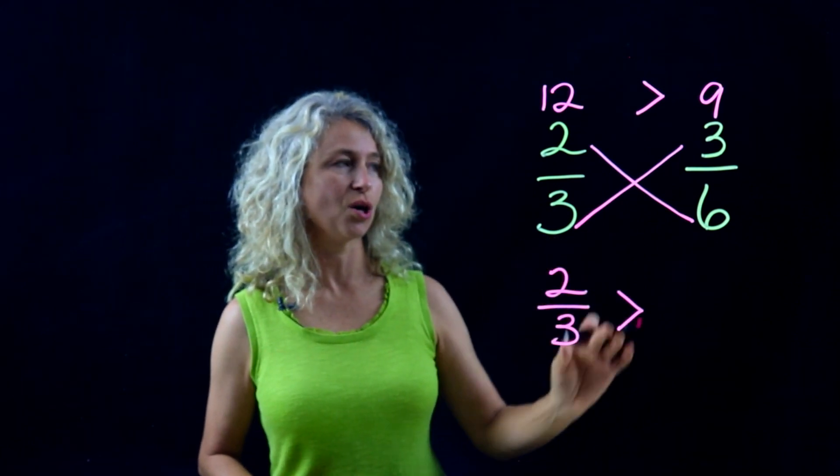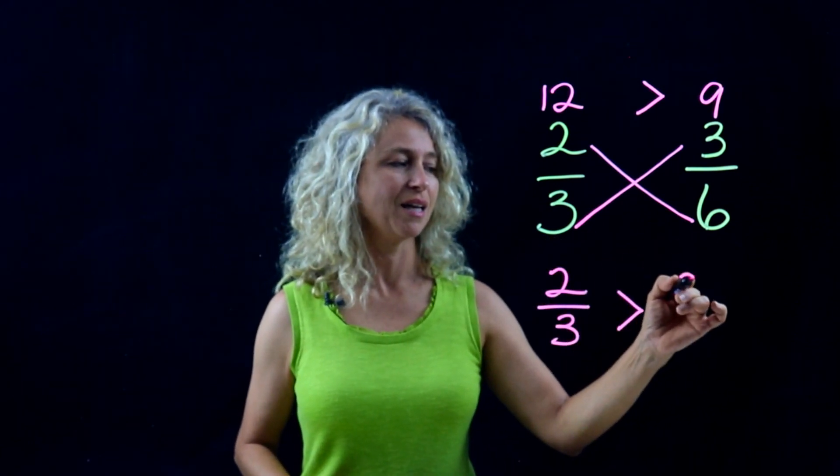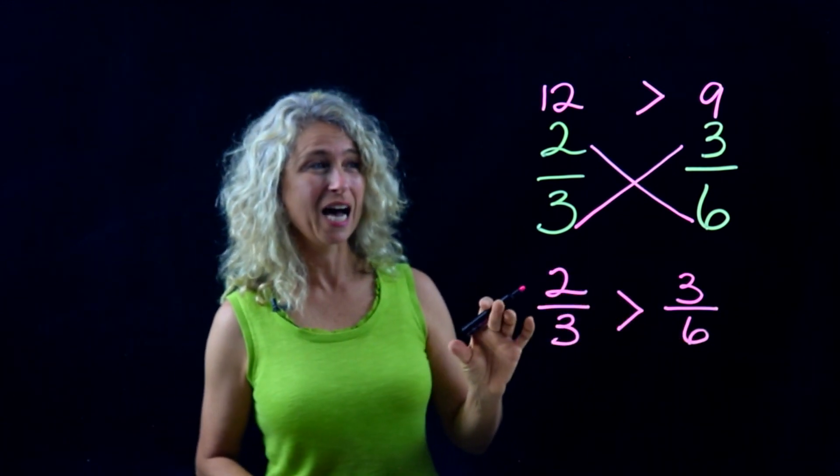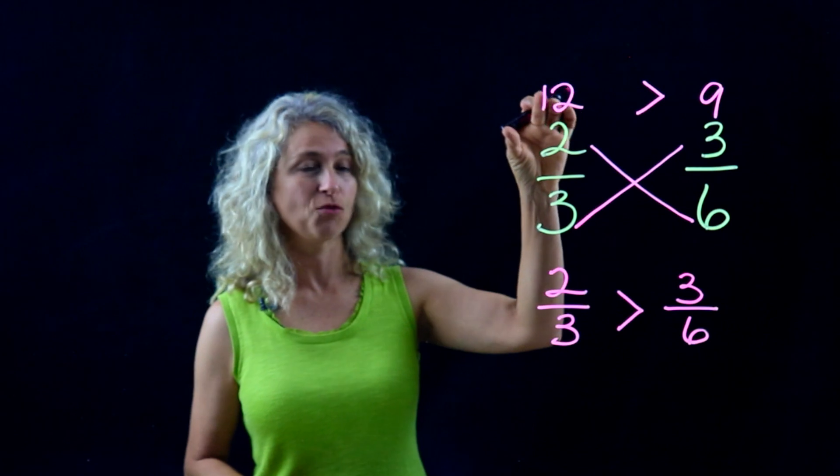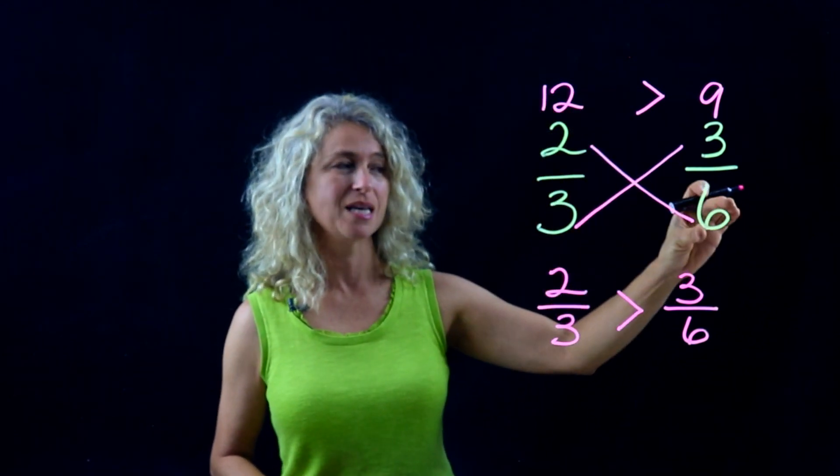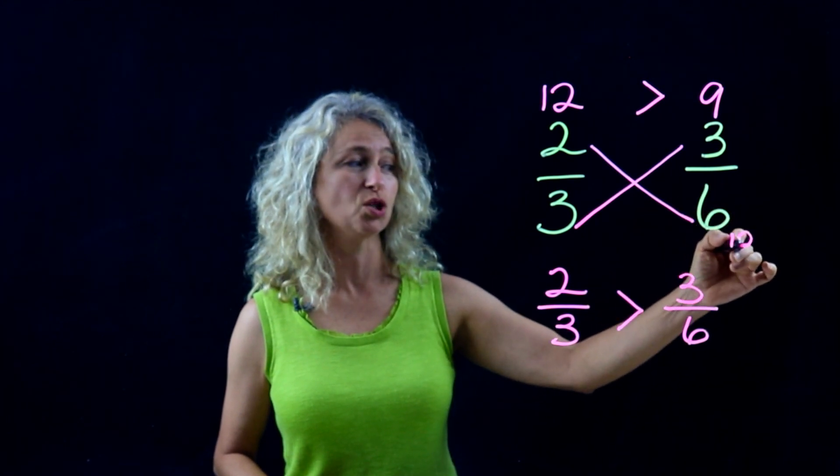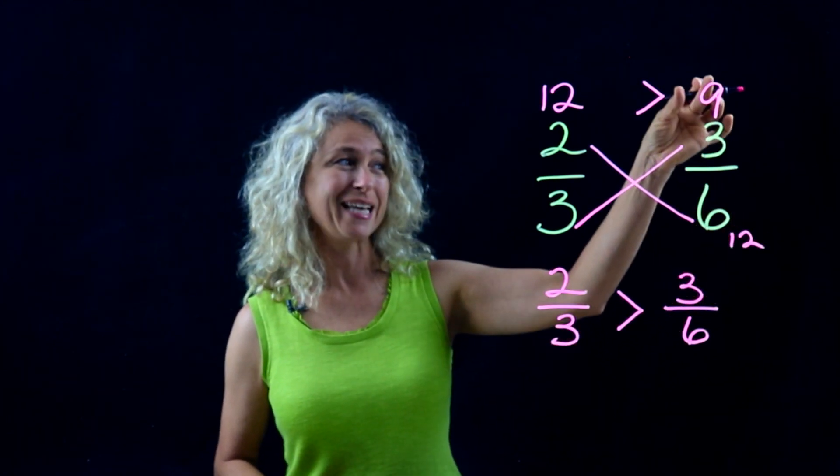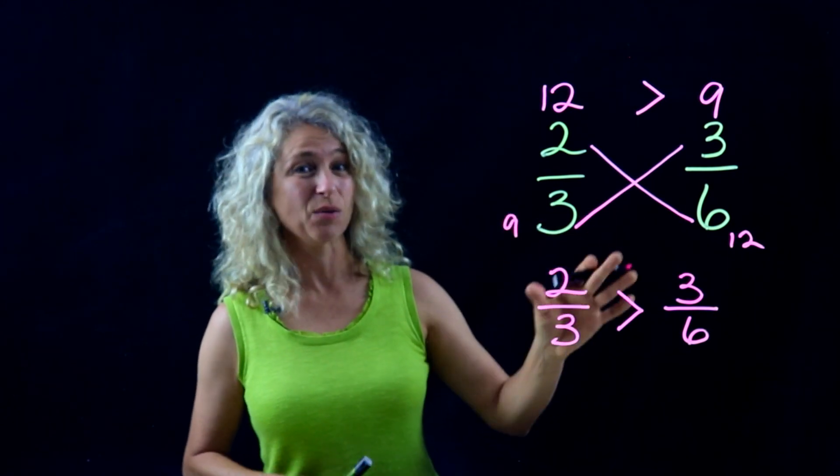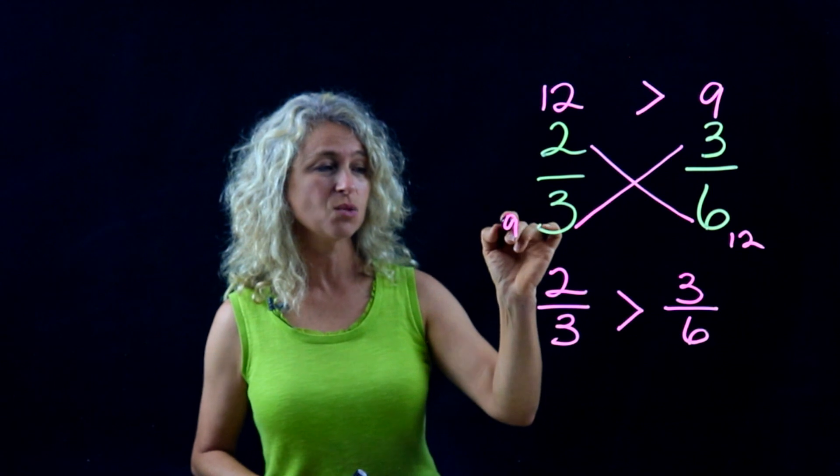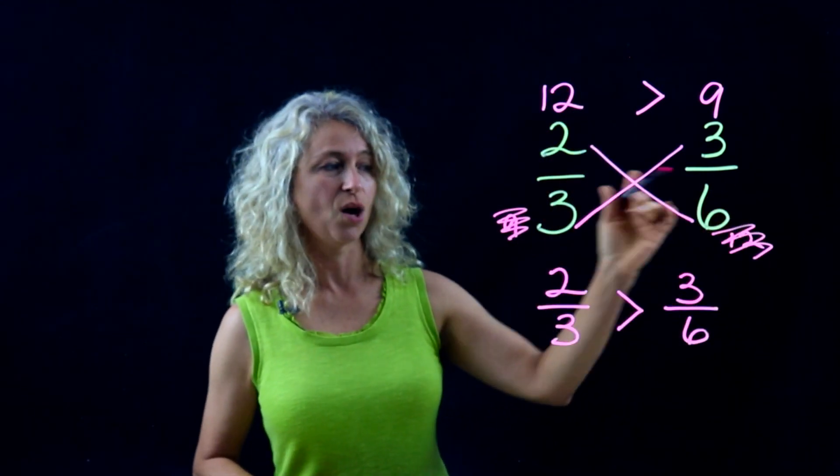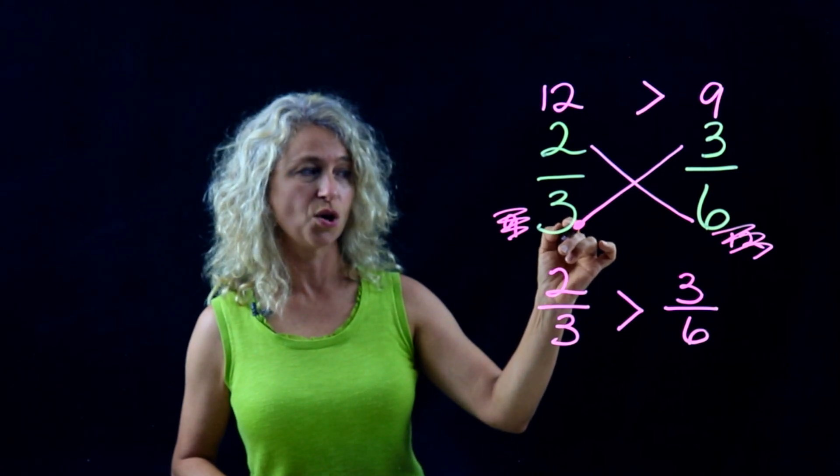Now if you get mixed up and you multiply from top down, you'll see that two times six is twelve, and if you put twelve over here and three times three is nine over here, you're going to get it reversed and it's going to be wrong. That is why you should never start at the top going down. Always, when you're cross multiplying, start at the bottom and go up.